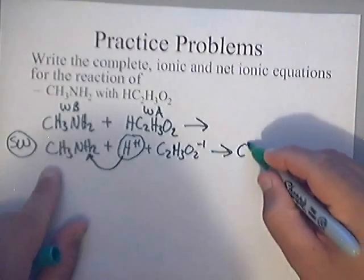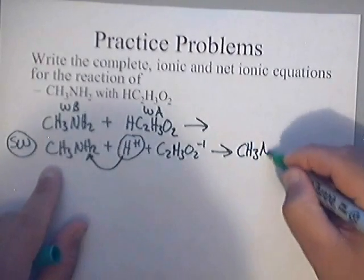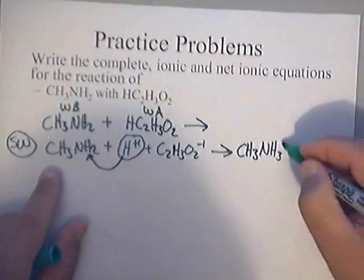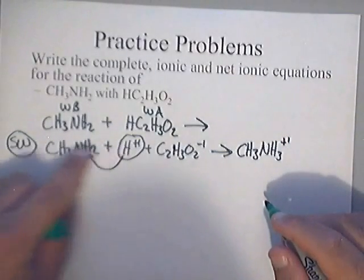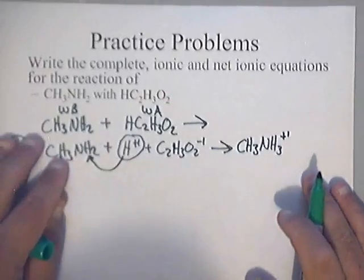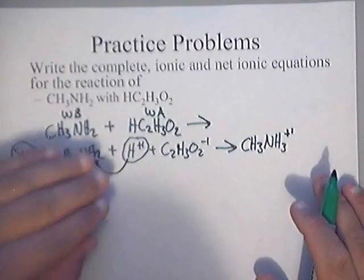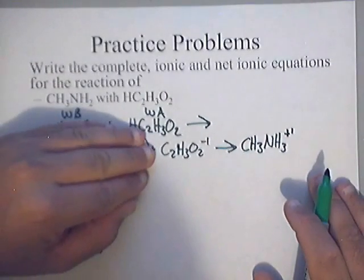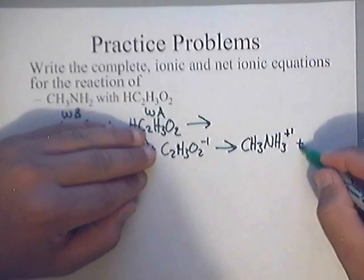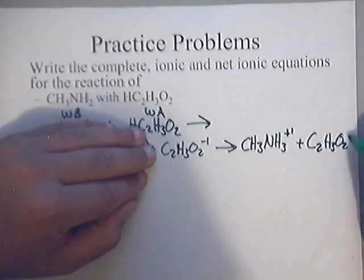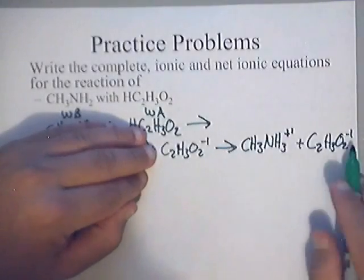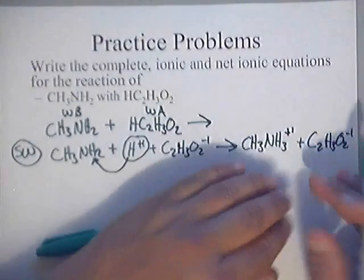Now, after that, that gives us the following. That gives us CH3NH3 with a positive one charge. Now, if that goes on to this, just like it did in the previous problem that we had earlier, then that leaves this acetate ion just floating around. Now that's nice because we can clearly see that these two opposite charges are going to attract and come together.